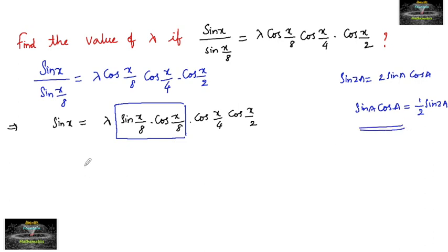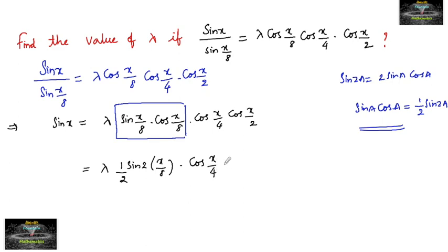Applying this formula to sin(x/8)·cos(x/8), we get sin(2·x/8)/2 = sin(x/4)/2. So the right-hand side becomes λ · (1/2) · sin(x/4) · cos(x/4) · cos(x/2).